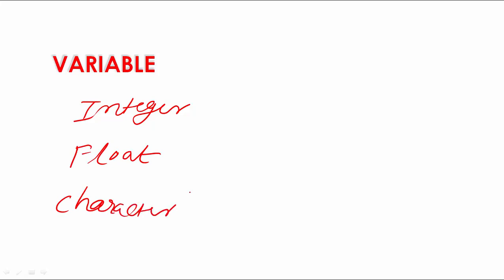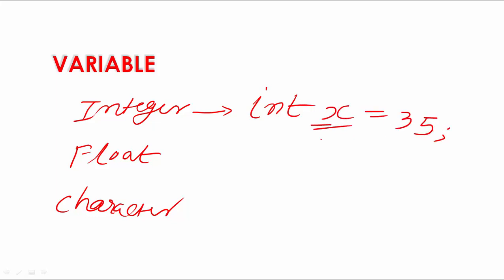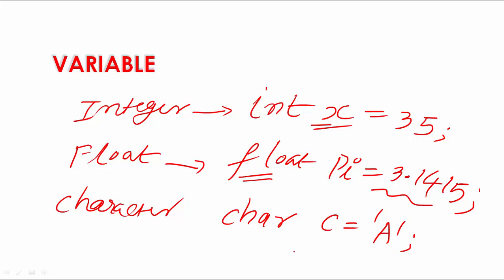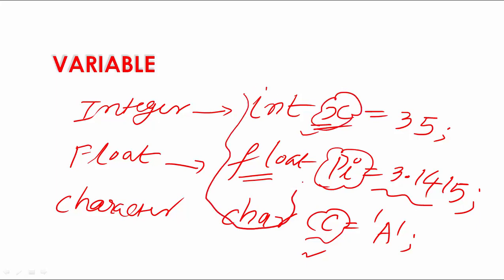Types of variables in C: we can have an integer variable, a float variable, or a character variable. An integer variable can be written like: int x = 35. A float variable can be written like: float pi = 3.1415, because it's a real number stored in float. A character variable can be written like: char c = 'a'. These three — int, float, and char — are the variable data types.